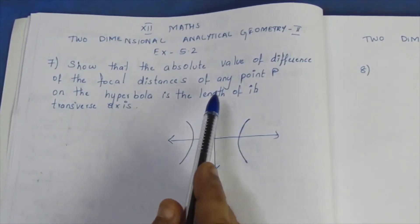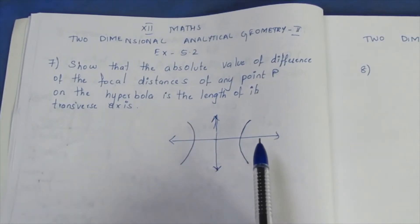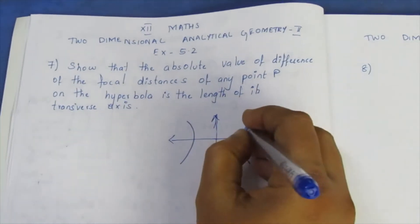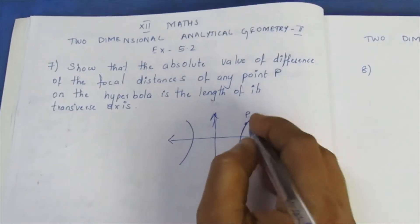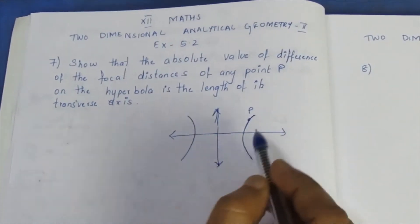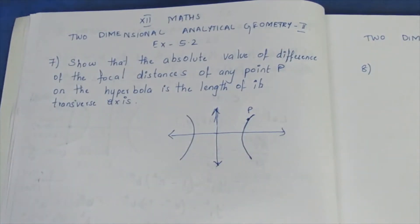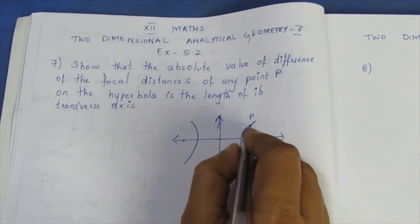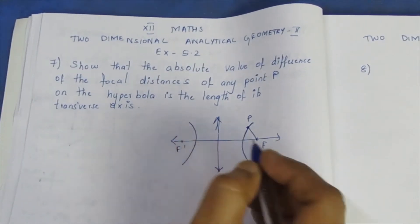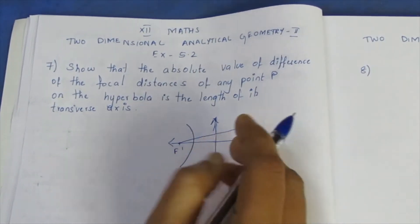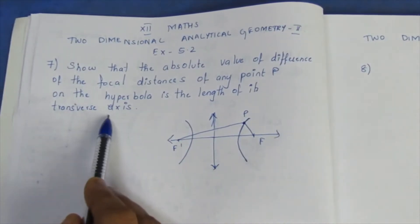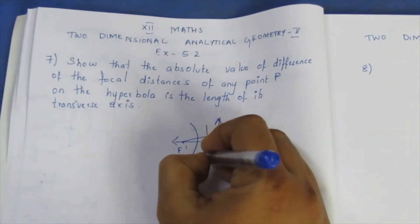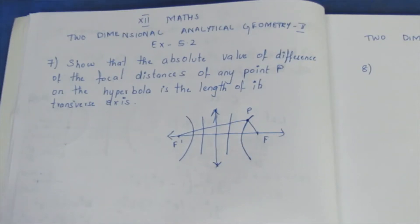Any point P on the hyperbola — here is a point P on the hyperbola. We have the X axis and Y axis. The hyperbola has two foci F and F dash. We need to look at the focal distances. The transverse axis length is equal to 2a, and this is the directrix.